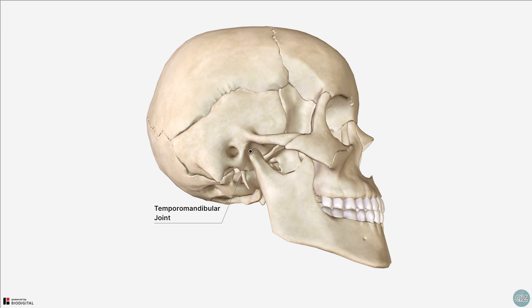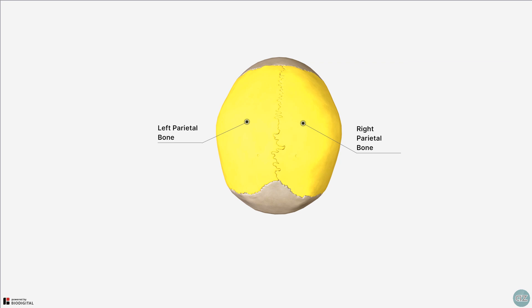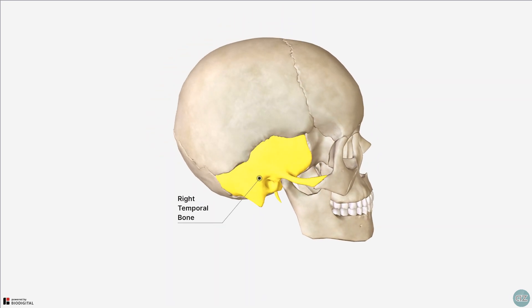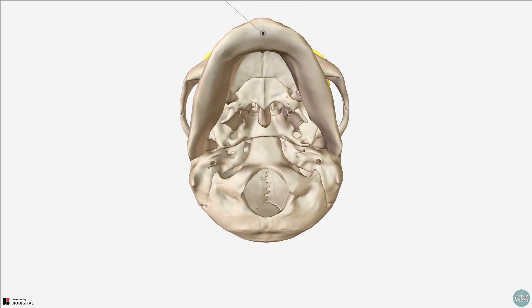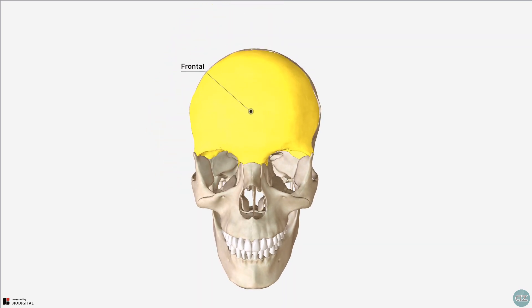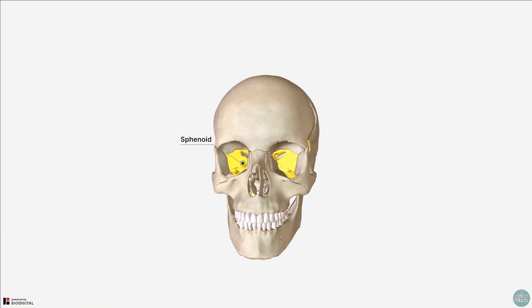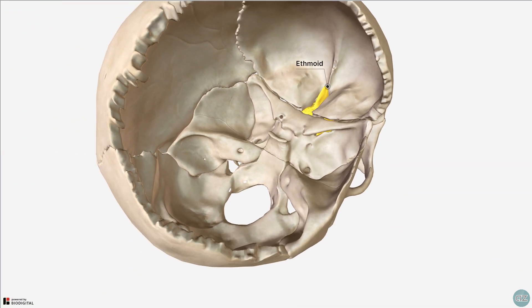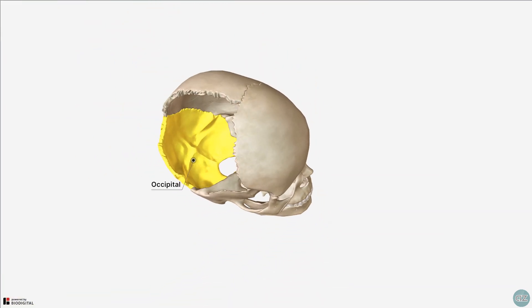So let's focus in on the bones of the neurocranium. It consists of both paired bones and unpaired bones. The paired bones include the parietal and temporal bones, and the unpaired bones include the frontal, sphenoid, ethmoid, and occipital bones.